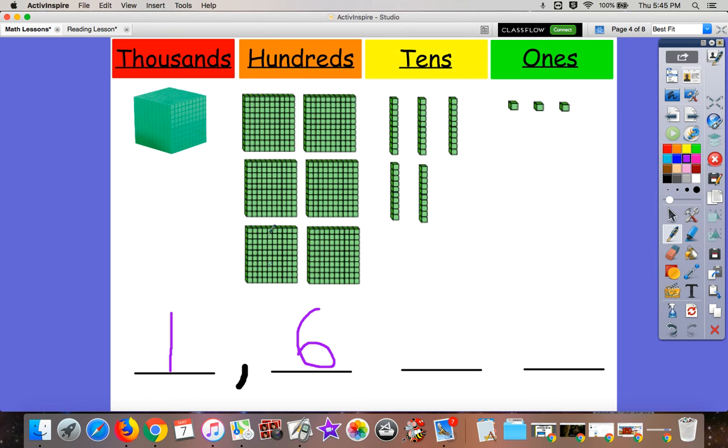Because we're going to count by hundreds. 100, 200, 300, 400, 500, 600. So six for 600.